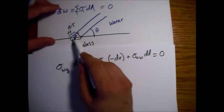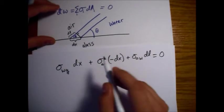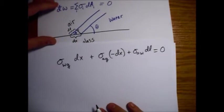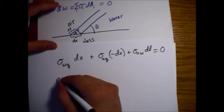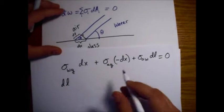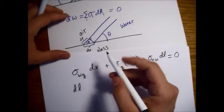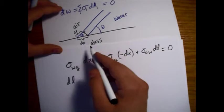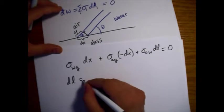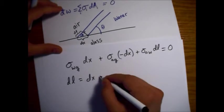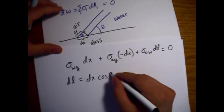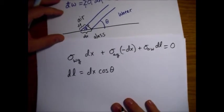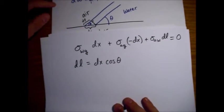So now, just looking at what is DL in terms of dx? Let's just write that right here. Well, it's a cosine. So, DL equals dx cosine of theta, like this.